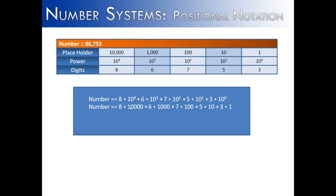Again, this is just a different way to do it. And then once we multiply all those numbers, we get these numbers, and then when we add them together, we get 86,753.